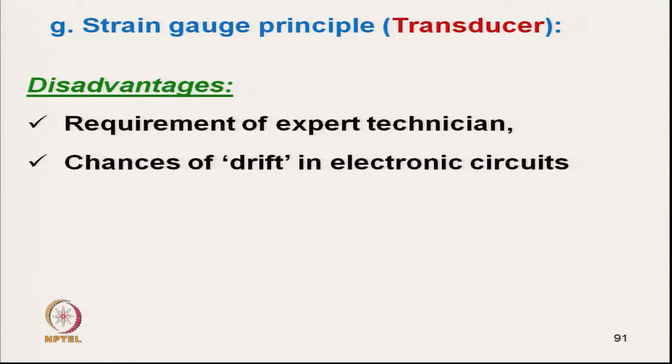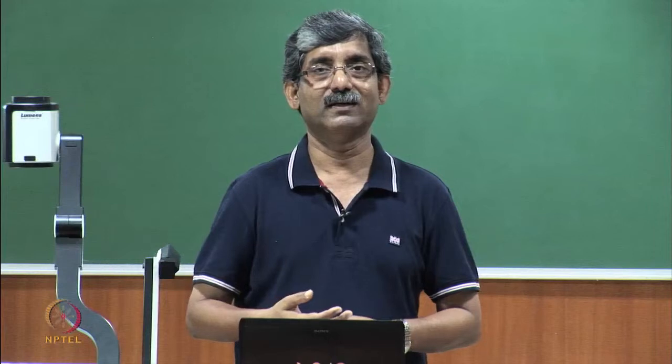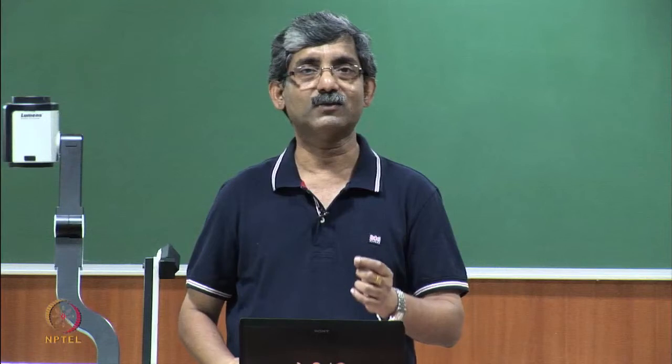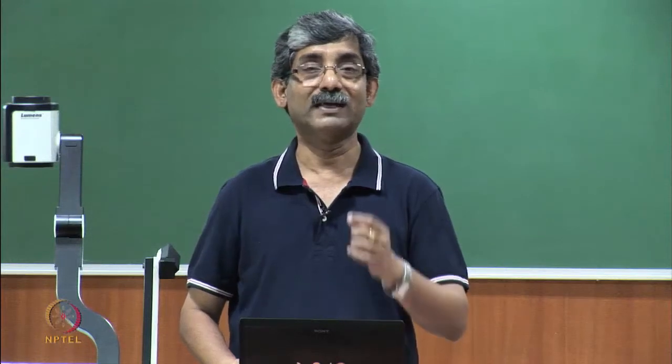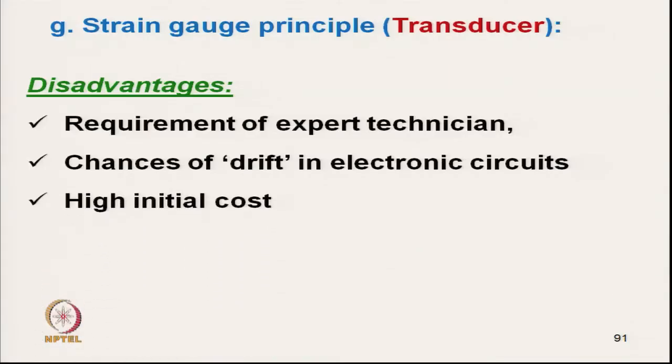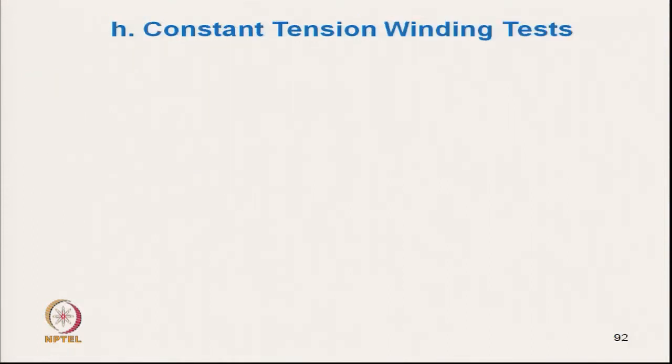The strain gauge instrument is versatile — it can be used for yarn, fiber, and a wide range of materials, from a few milligrams to several tons. Main disadvantages: it requires expert technicians for repair, there is a risk of drift in the electronic circuit requiring recalibration, and the initial cost is very high.